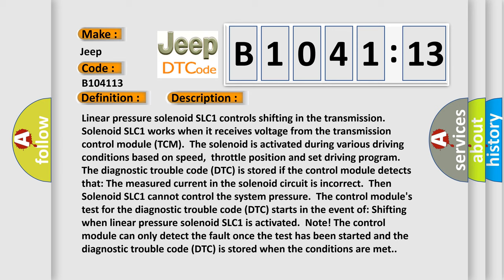The control module's test for the diagnostic trouble code starts in the event of shifting when linear pressure solenoid SLC1 is activated. Note, the control module can only detect the fault once the test has been started and the diagnostic trouble code is stored when the conditions are met.